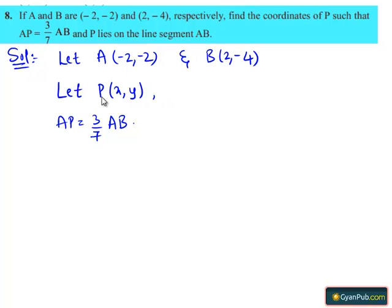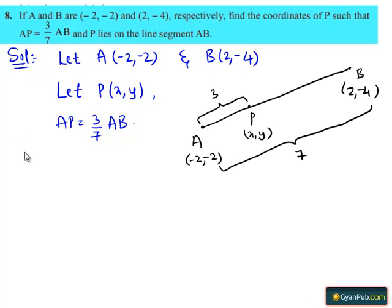Let us represent the given data diagrammatically. AP equals 3/7 of AB. Here AB can be written as AP plus PB.